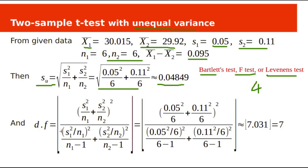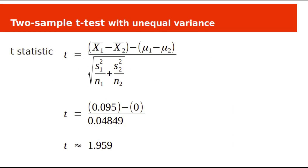The degrees of freedom are calculated using the Welch formula, giving 7.031. Applying the floor function gives 7. Substituting the difference of sample means and standard deviation into the t-statistic formula gives a t-statistic of 1.959.